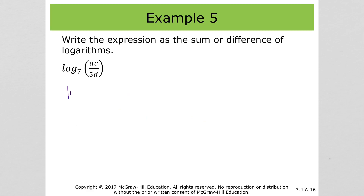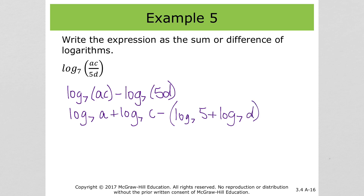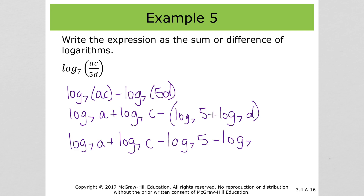For this one, doing it one step at a time, we've got log base 7 of a plus log base 7 of c minus — and we need parentheses because it's minus all of the log base 7 of 5d — so it's minus all of (log base 7 of 5 plus log base 7 of d). Then we'll rewrite it distributed. This is why I say do one step at a time, because that log base 7 of d also has to be negative.